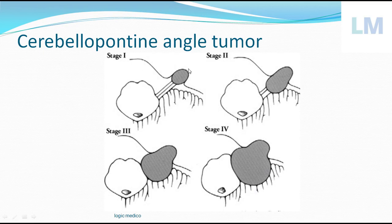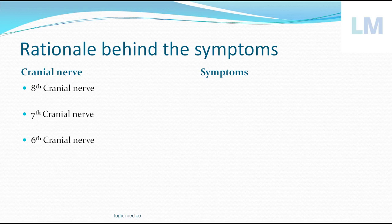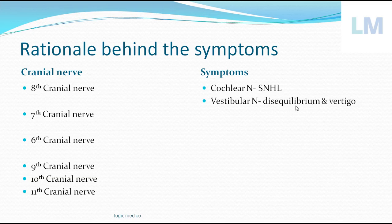To summarize: Stage 1 is intracanalicular; Stage 2 is intracranial but not toward the CP angle; Stage 3 is stretching/touching the CP angle; Stage 4 compresses structures near the CP angle including the pons, cerebellum, and cranial nerves. The eighth, seventh, and sixth cranial nerves are horizontally present from the CP angle toward the midline of the brainstem at the pontomedullary junction. The ninth, tenth, and eleventh cranial nerves are vertically oriented, descending the posterolateral sulcus of the medulla oblongata. If the cochlear division of the eighth nerve is involved: sensorineural hearing loss. If the vestibular division: disequilibrium and vertigo — a sensation of giddiness.